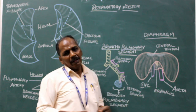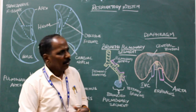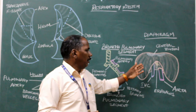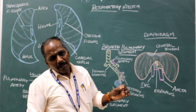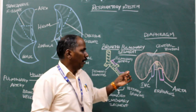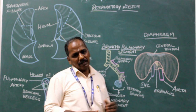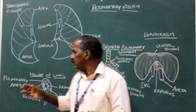Nerve supply of the diaphragm: phrenic nerve. Blood supply: superior and inferior phrenic arteries.